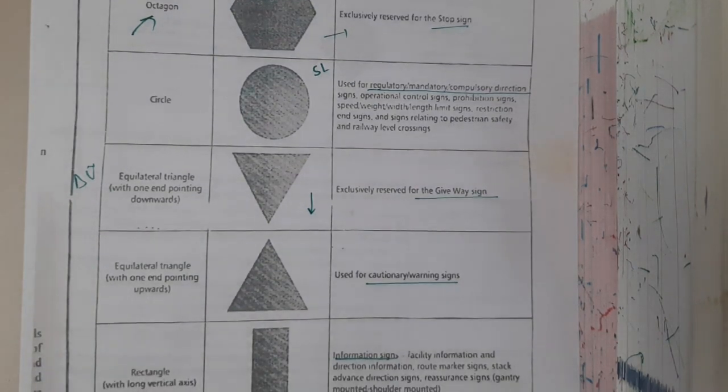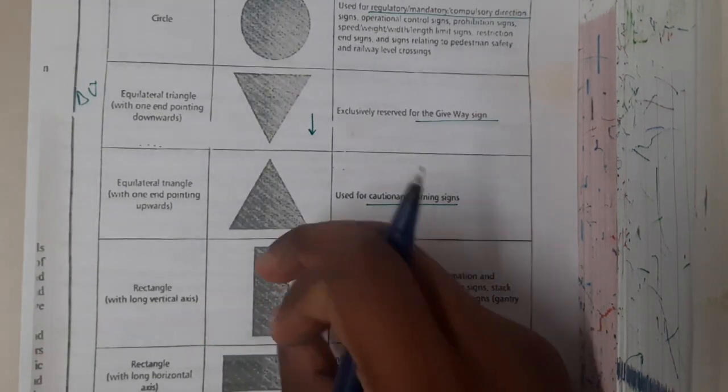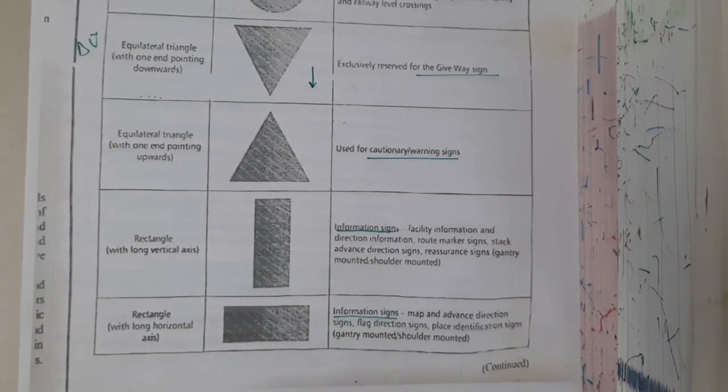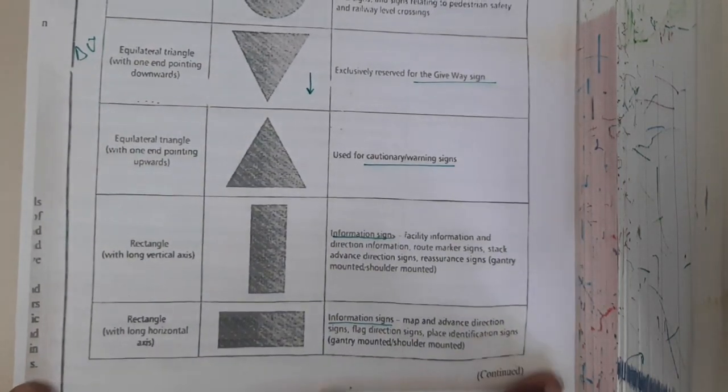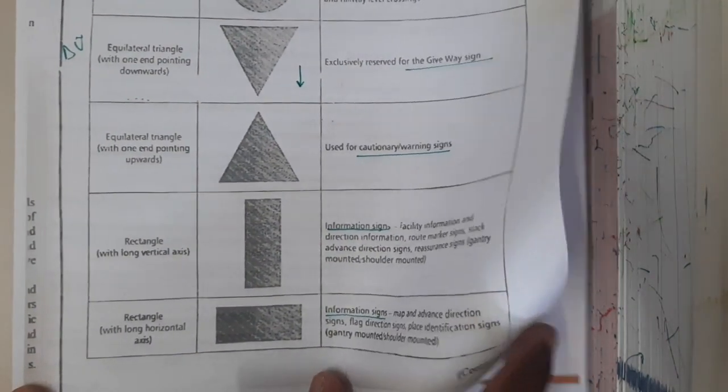Whereas the rectangle, it might be in vertical axis or in horizontal axis, rectangle is just for showing the information signs. Any kind of hotels, telephones, and all those things. We are also having these kinds of symbols also.